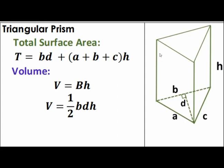The area of the first rectangular face is AH, the second face is BH, and the third face is CH. The sum of the three rectangular faces is AH plus BH plus CH. Factoring out H, we have H times the quantity A plus B plus C.